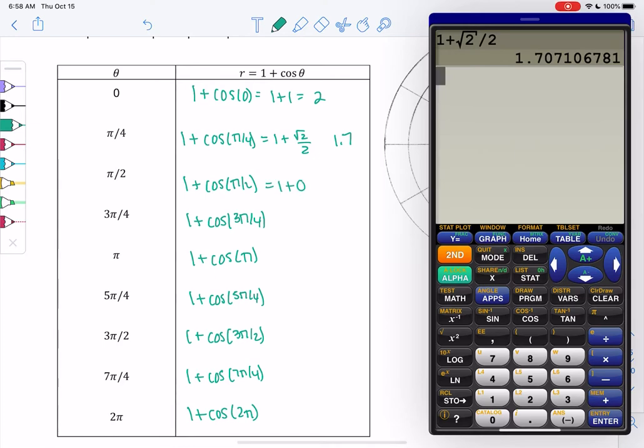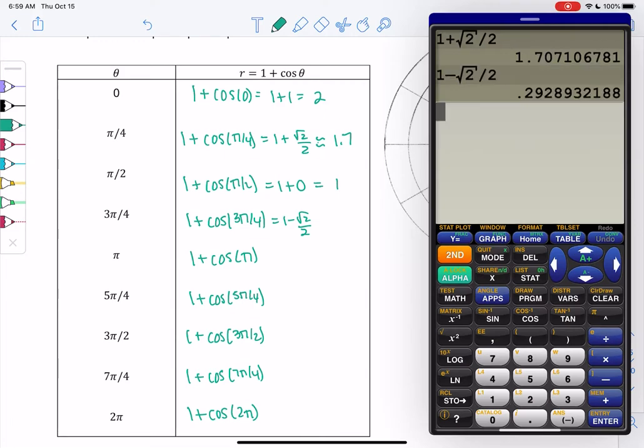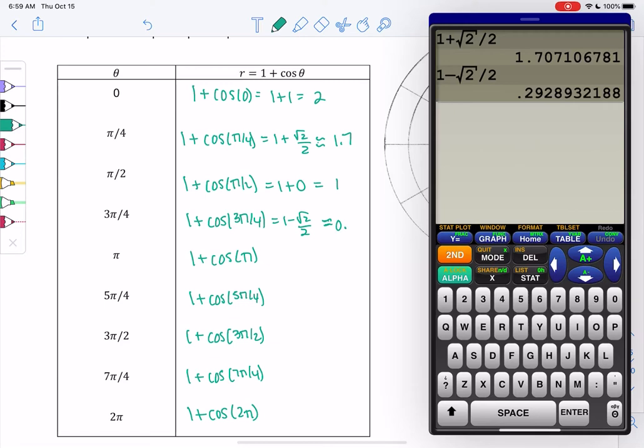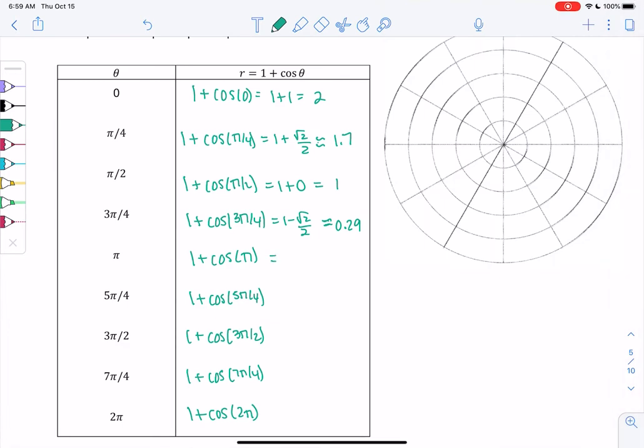Cosine of pi over 2 is 0, so 1 plus 0 or 1. 3 pi over 4 was 1 minus root 2 over 2 because it was negative. So let's also estimate that just to help us graph. This will all make sense. We're just finding a couple points like we did in our algebra classes, and we'll see what kind of graph it makes. So it's approximately 0.29. Cosine of pi, that was negative 1, so that's 0, 1 minus 1. 5 pi over 4 is 1 minus root 2 over 2. So that was that 0.29 again. 3 pi over 2, hopefully we got 0. I'm using the unit circle to do all this. And then we get 1 plus root 2 over 2, or we get that 1.7 again, and then we get 1 plus 1 or 2 again.